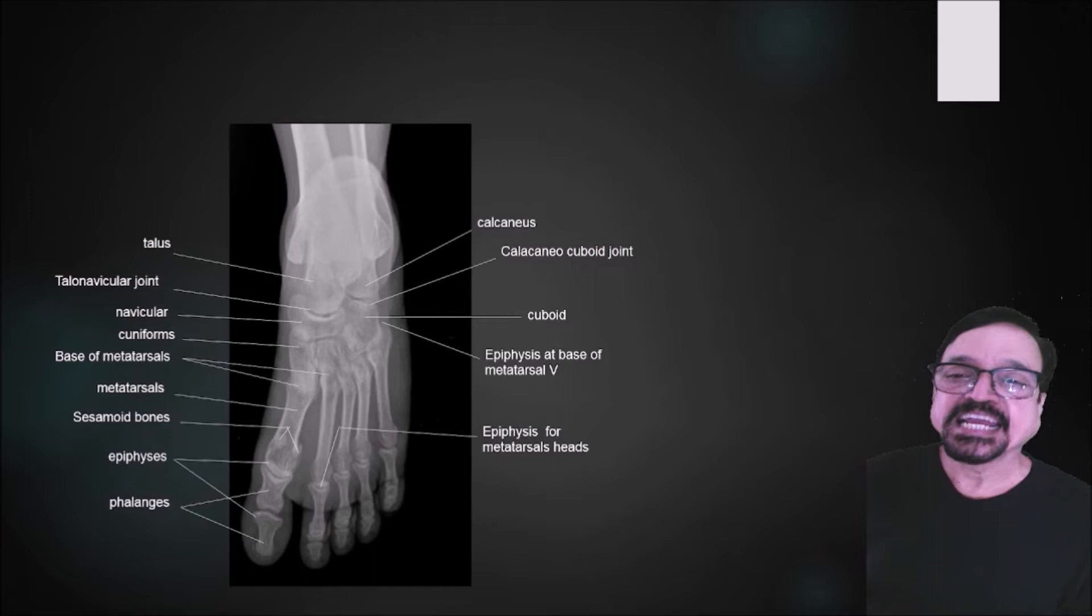As well as phalanges has to be seen in at least two projections, so AP is taken for that. They are fairly well seen because once we start making oblique, they start getting either overlap or they start getting slightly less clear.